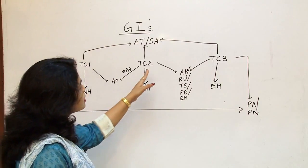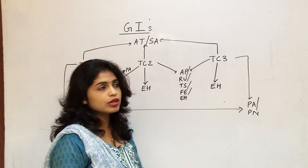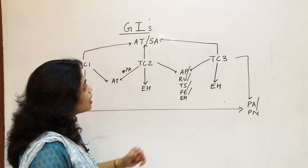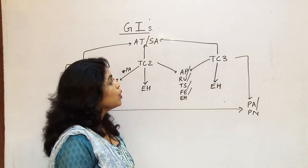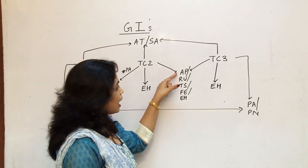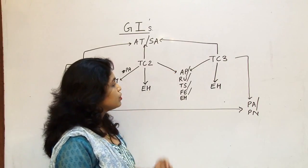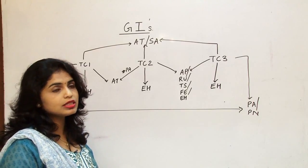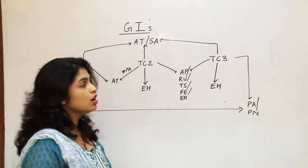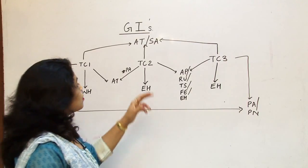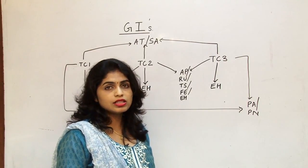Now what we have is TC2 and TC3. So suppose if we are talking about TC2 which is Europe, Middle East and Africa and we are talking about TC3 which is Asia and Southwest Pacific zone. We may have either AP or RU or TS or FE or EH. So these are the global indicators which are possible that is the routes that the flight can take if the flight is travelling between TC2 and TC3.